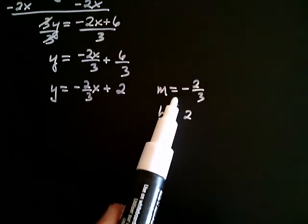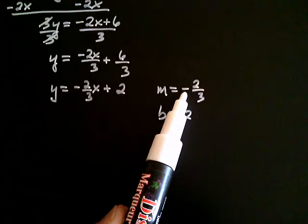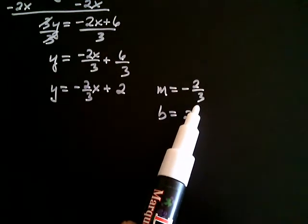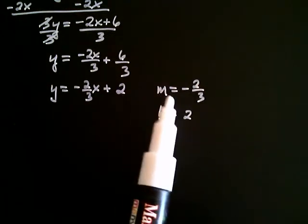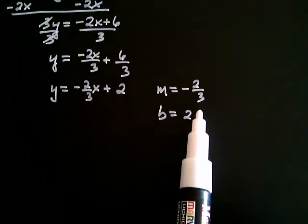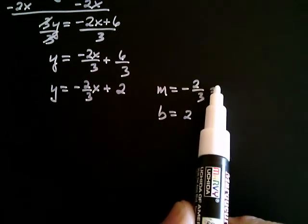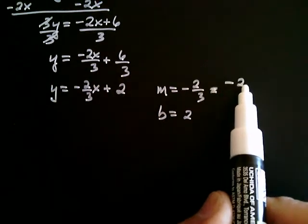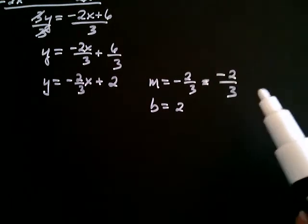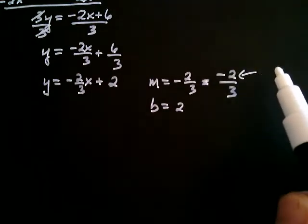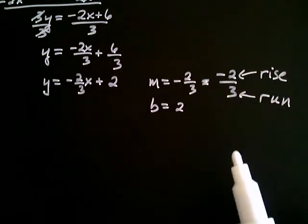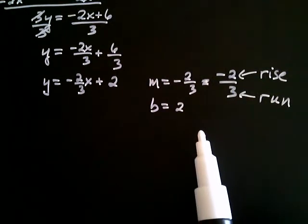Now we have to decide what to do with the negative. You can write negative 2 over 3, or 2 over negative 3. When graphing lines, I'm going to put the negative with the numerator so that the denominator stays positive — that will help in applications down the road. So the rise is negative 2, the run is positive 3, and the y-intercept is 2.